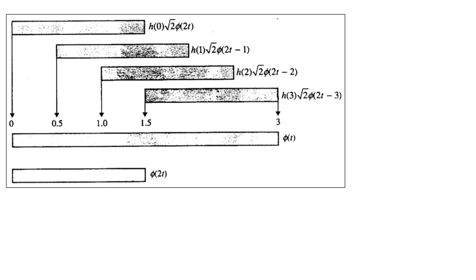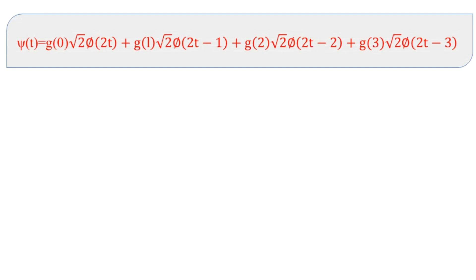Since Φ(2T) is a compression of Φ(T) in time, the Db4 scaling function can be built up iteratively. Similarly, the associated Daubechies wavelet function Ψ(T) can be generated using wavelet coefficients g(k): Ψ(T) = g(0)·√2·Φ(2T) + g(1)·√2·Φ(2T−1) + g(2)·√2·Φ(2T−2) + g(3)·√2·Φ(2T−3).